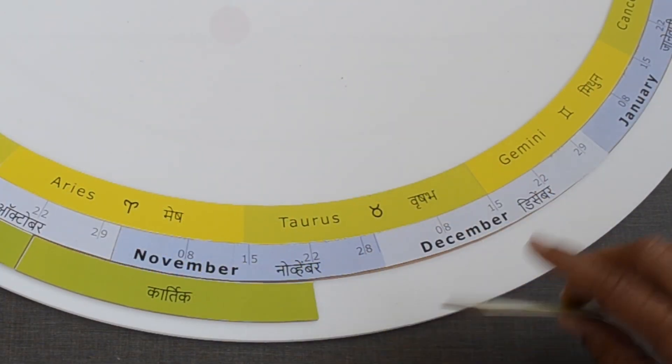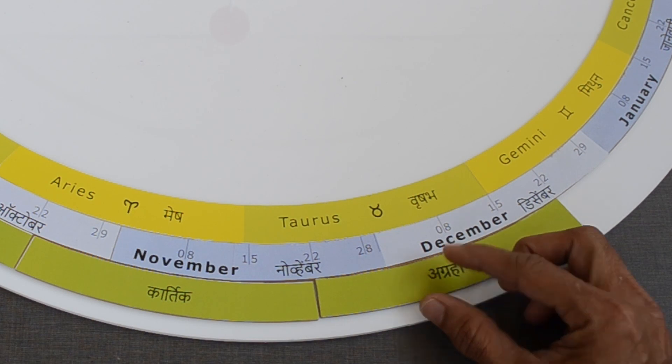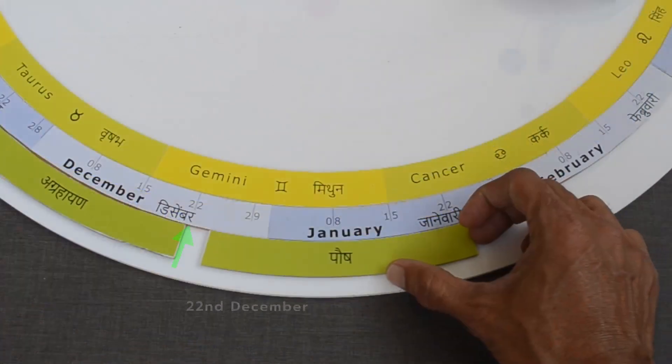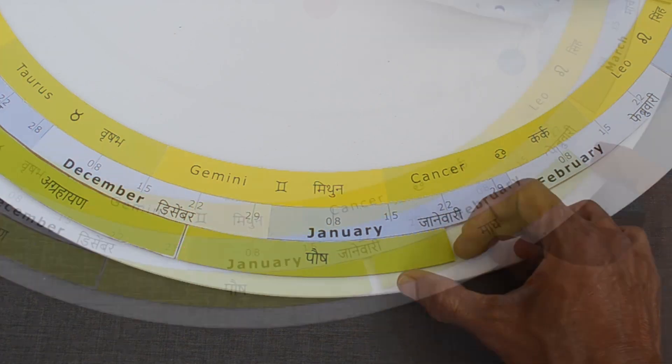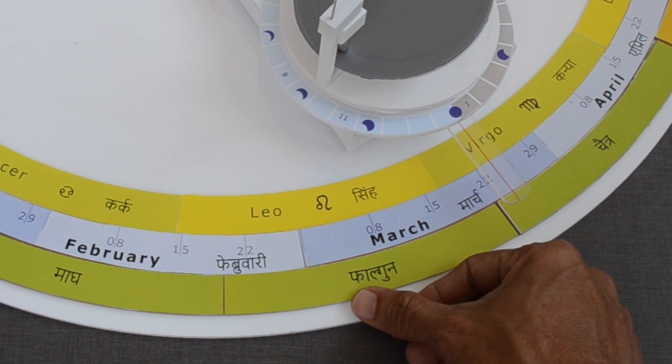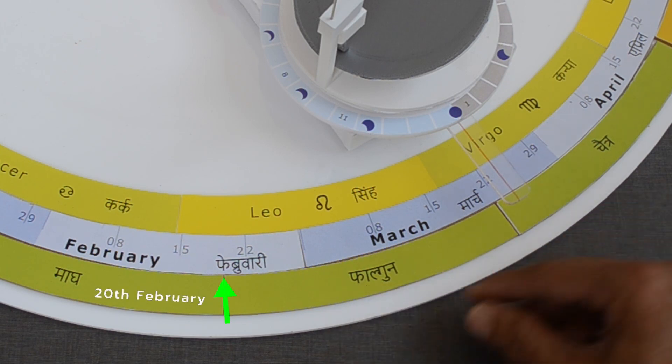Instead of Margashish, this month is called Agrahayana and starts on 22nd November. Pauş starts on 22nd December, while Maag, 21st January. The last month Falgun starts on 22nd February.